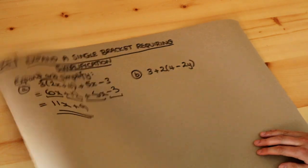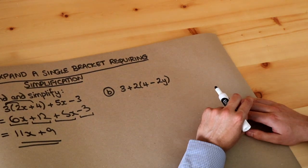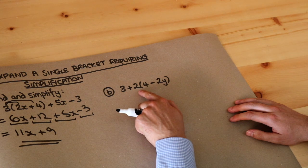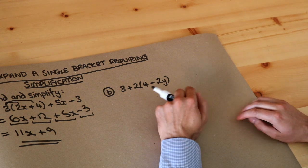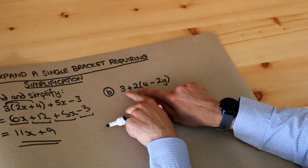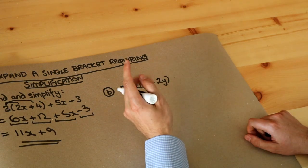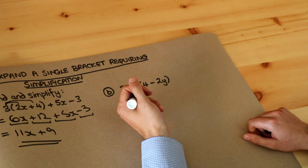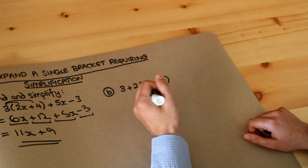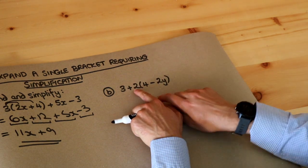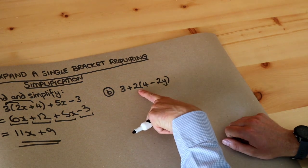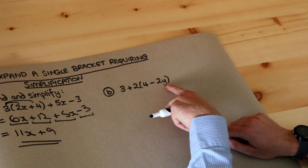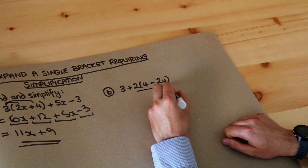And then what about this? Some students would try to do the 3 plus 2 and say well that's 5 and then do 5 times the 4 minus 2y but there's no reason that we would do the 3 plus 2 first. Remember by order of operations which you might know as BIDMAS or PEDMAS, we do the multiplication first so the 2 times the 4 minus 2y and then we're adding on the 3. So this is grouped together with the 4 minus 2y so that's one thing.